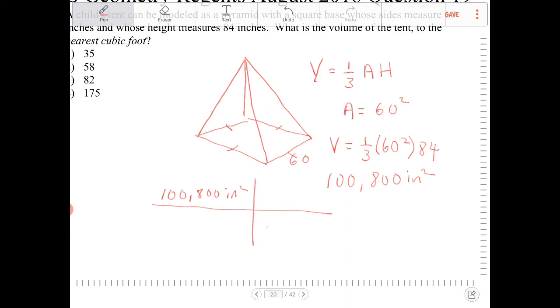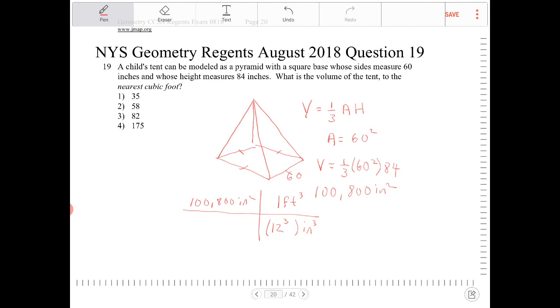I know that in one cubic foot, there's a total of 12 cubed cubic inches worth of space. So I'll need to take that number and divide by 12 cubed.